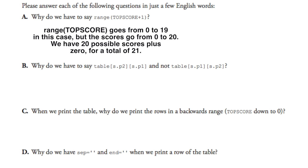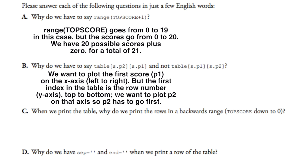Problem B: Why do we have to say table[s.p2][s.p1] and not table[s.p1][s.p2]? Well, the reason for this is we want to plot the first score, which is P1, on the x-axis left to right. But the first index of the table is the row number, so we kind of got an inverse situation here. And that is the y-axis goes from top to bottom, or the columns. And we want to end up plotting P2 on the y-axis. So P2 has to go first.